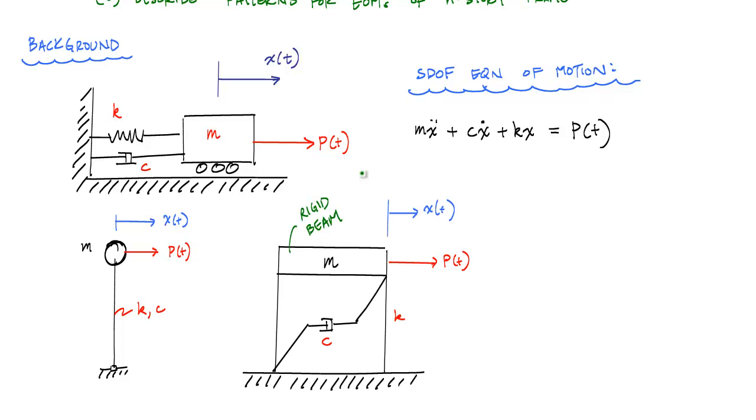And really when these single degree of freedom systems were vibrating, they all just took one shape. But in reality, there are many, many degrees of freedom in a structural system and many possible shapes or many shapes that contribute to its display shape during vibration.